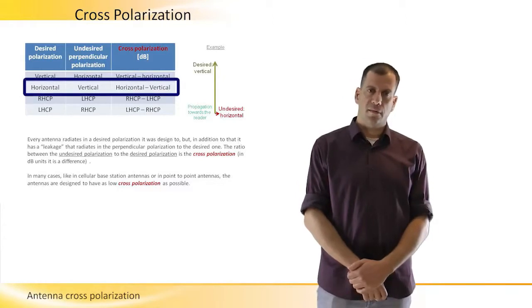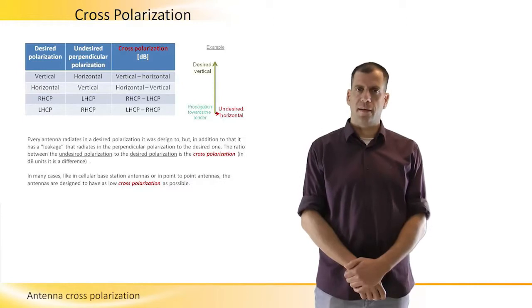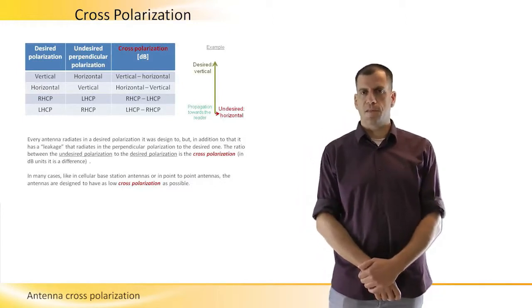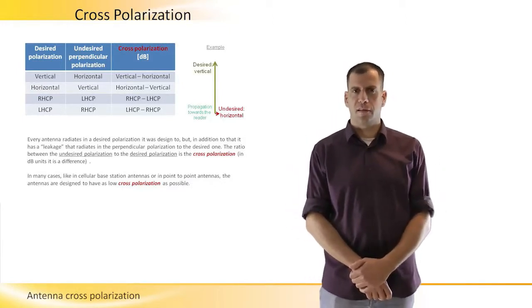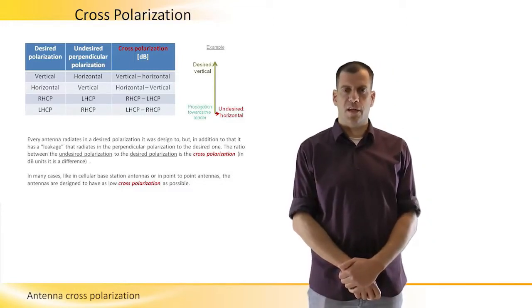For horizontal, in the same way, the vertical is the cross-polarization. Right-hand is the opposite of left-hand or the cross of left-hand circular polarization and vice versa.